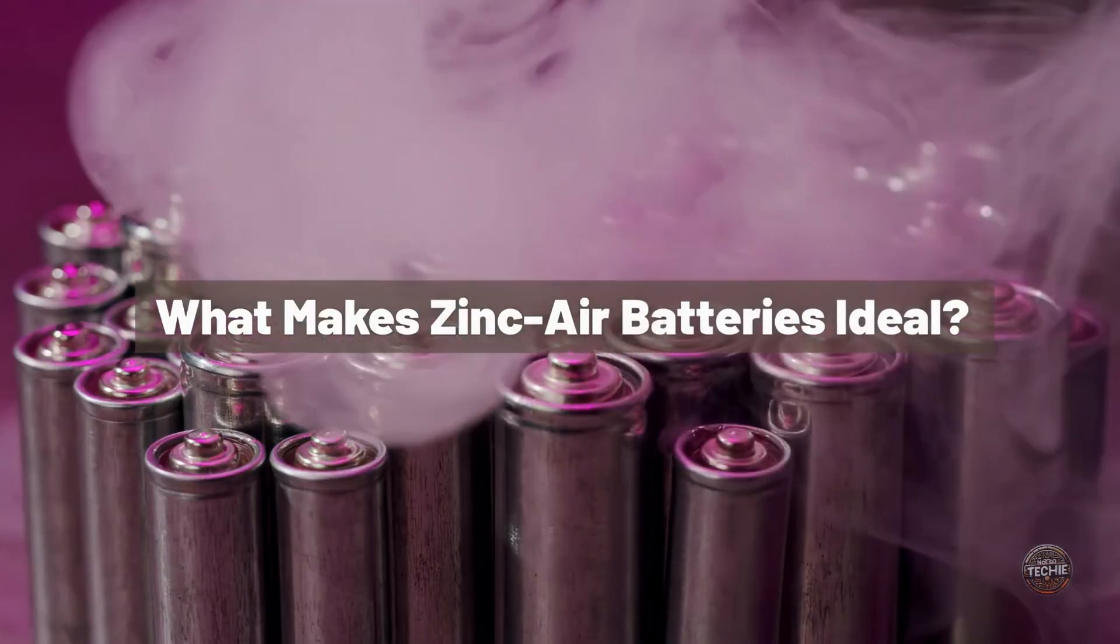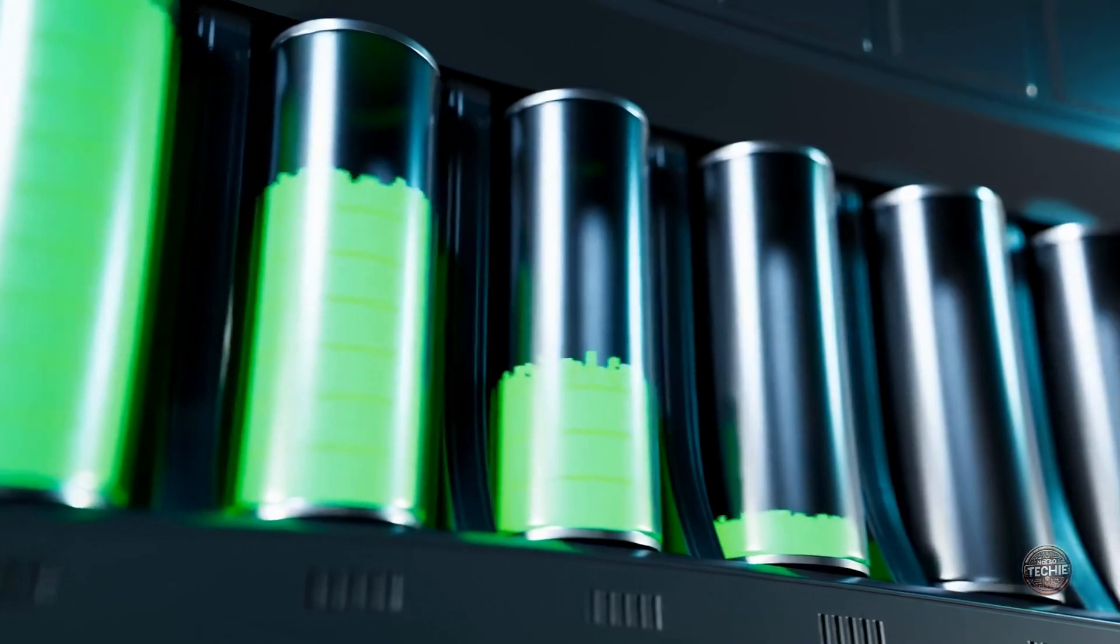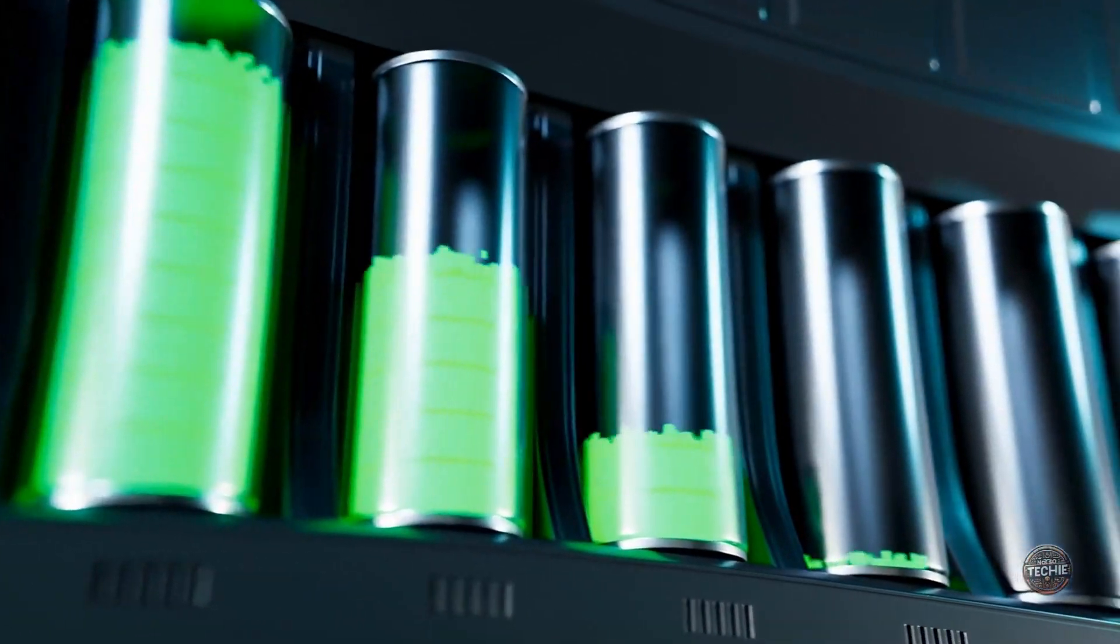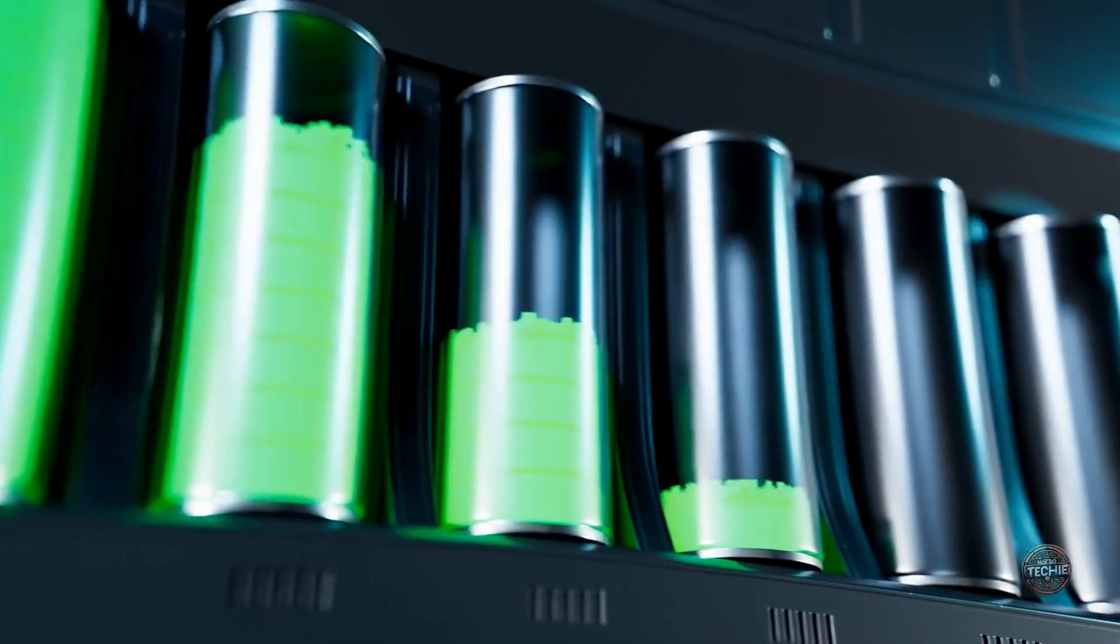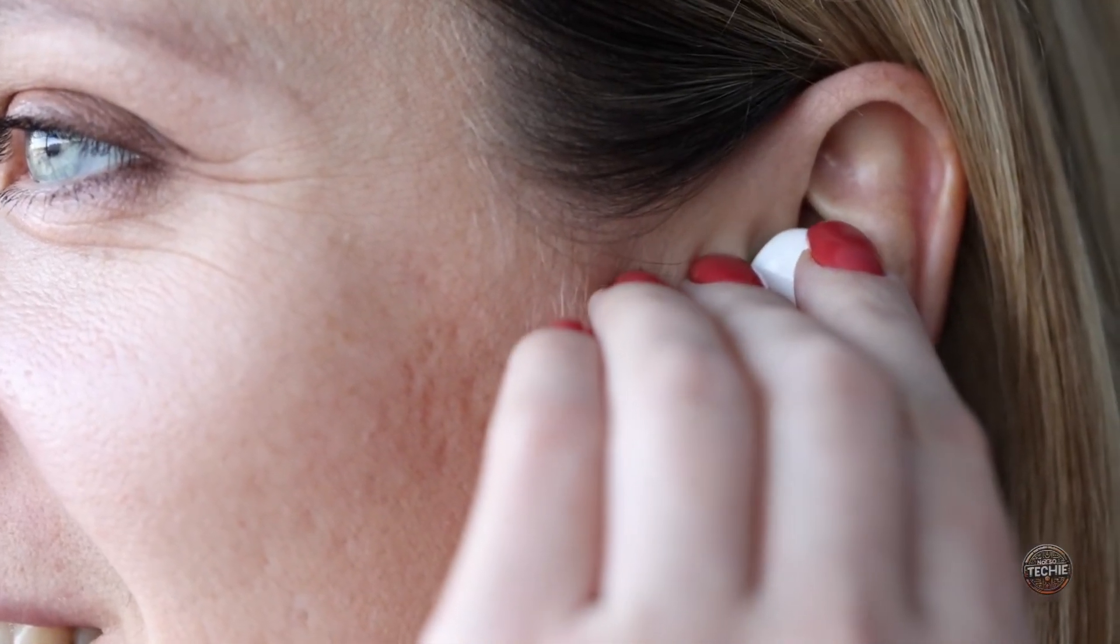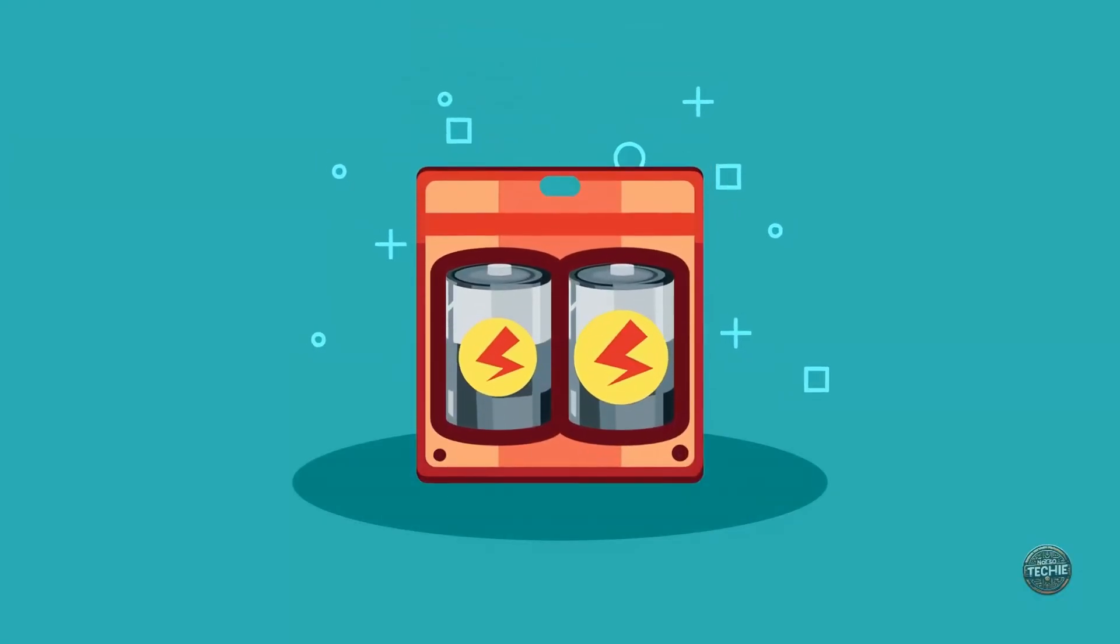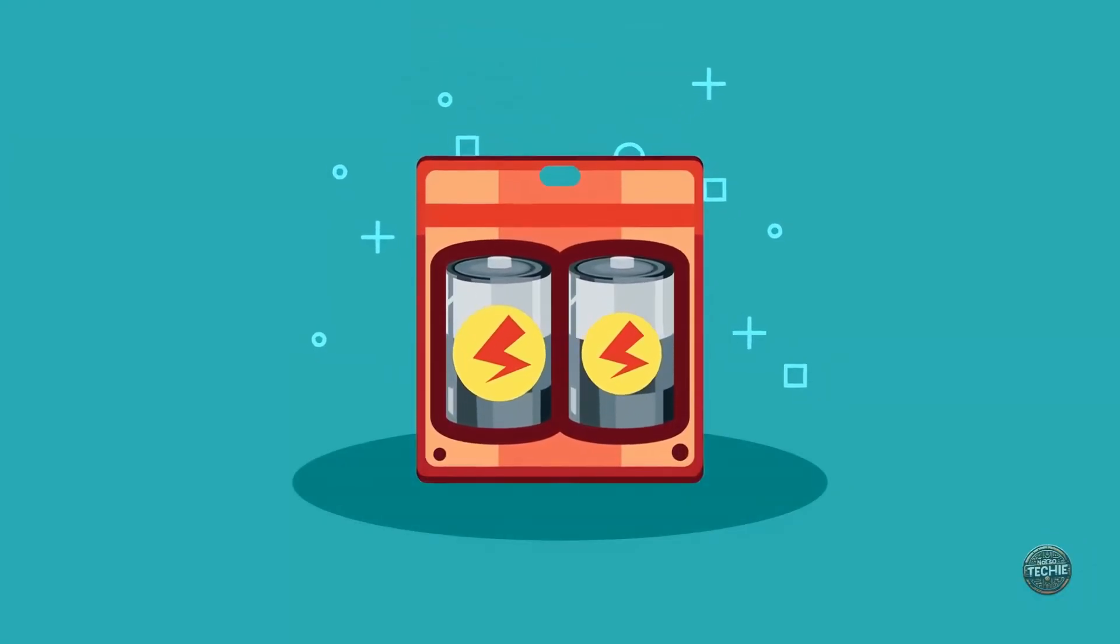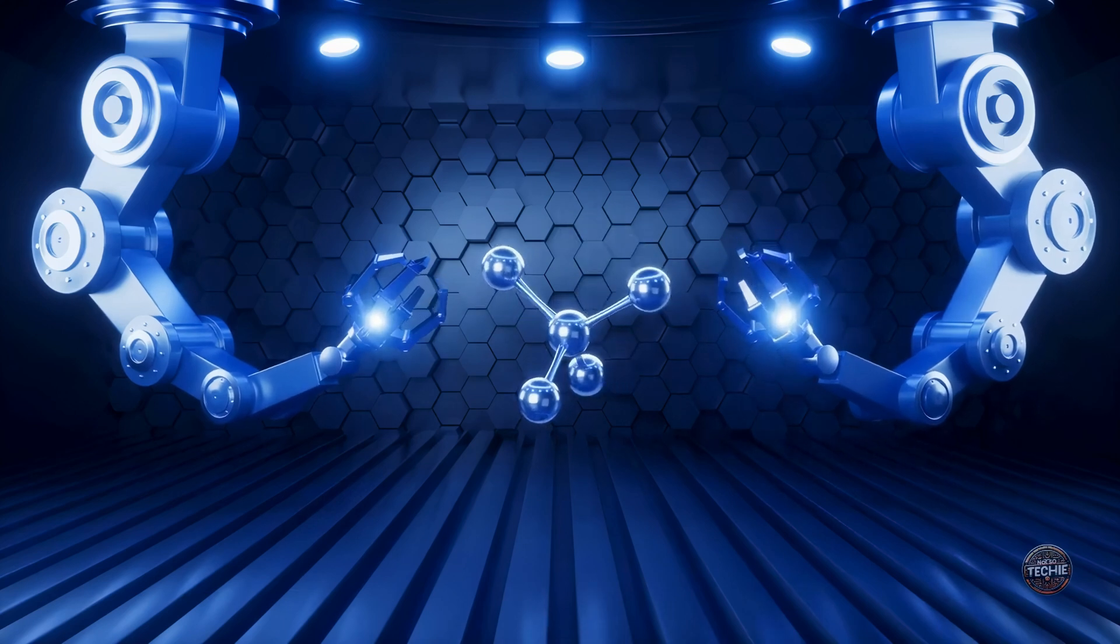What makes zinc air batteries ideal? Zinc air batteries are known for their high energy density, making them ideal for tiny robots. These batteries have been used in hearing aids because they last longer and are reliable. What MIT did differently is they incorporated the battery directly into the design of tiny robots, making them fully autonomous.